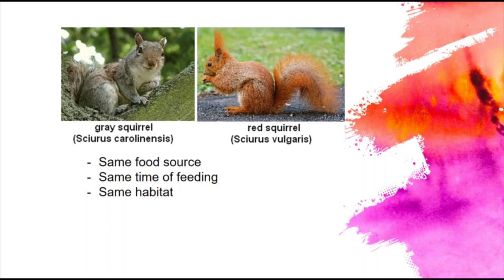This has happened with red squirrels — there used to be so many of them in the UK, but now that gray squirrels, an invasive species, have made their way over, they've outcompeted the red squirrels. Something about the way they are means they can get to food sources better — they're slightly bigger. Basically, two organisms with the exact same niche cannot survive forever; one would be outcompeted.